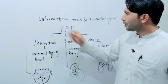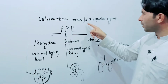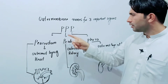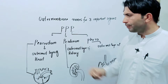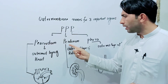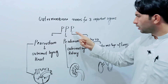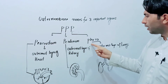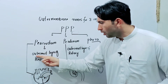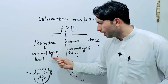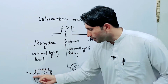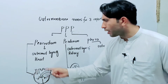Assalamualaikum. Outer membrane names — remember three important organs with triple P: one P for pericardium, one P for peritoneum, and one P for pleura. So what is pericardium? The outermost layer of the heart. This is the heart, and this is the outermost layer — it's called pericardium.